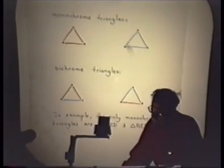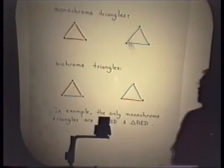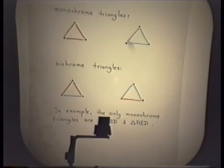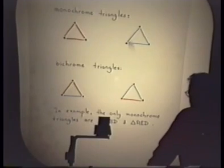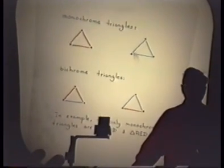Here is my illustration of my terminology. There are two types of monochrome triangles, all red and all blue. And there are two types of bichrome triangles, mostly red and mostly blue. And in the example that I showed, the only monochrome triangles were the red A, B, D. This is a summary.